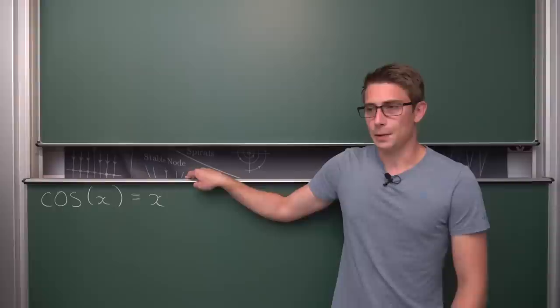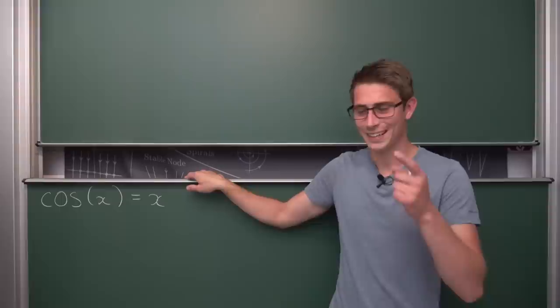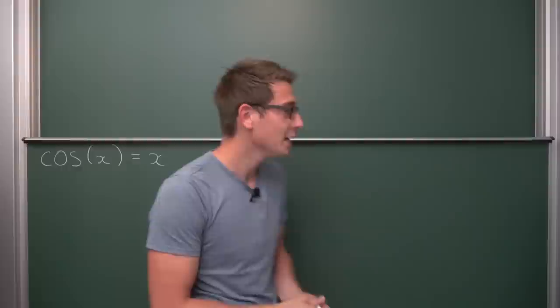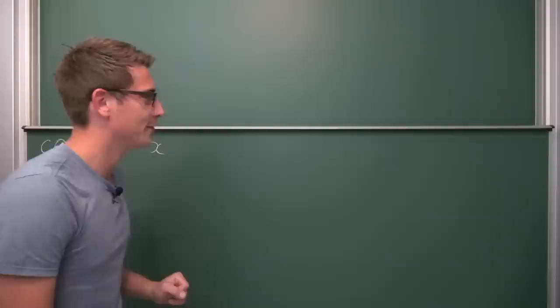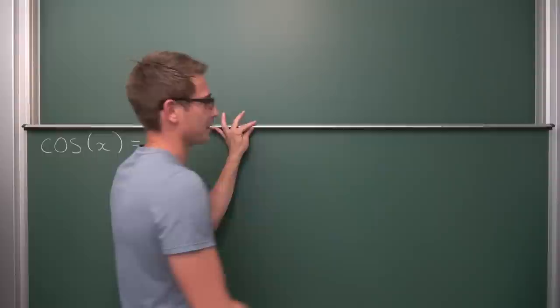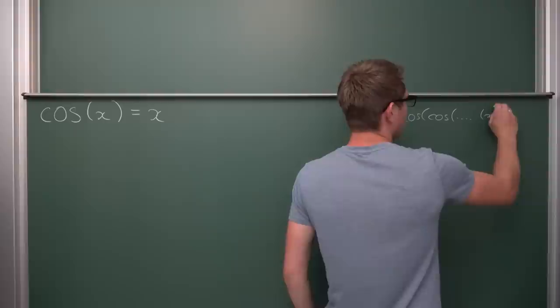A while back I posted a video about integrals with huge convergence problems — and what a terrible video. I really didn't like it, but never mind, it's out there and a lot of people have seen it. There was this one integral: the cosine of the cosine of the cosine, and so on, of x up until infinity, integrated with respect to x.